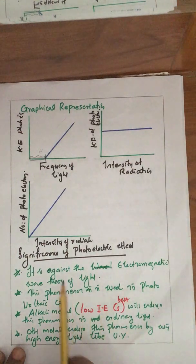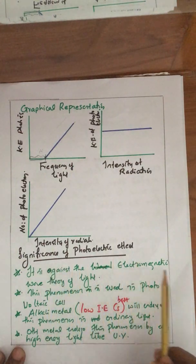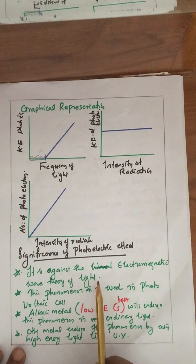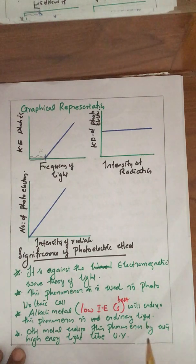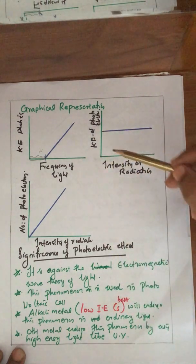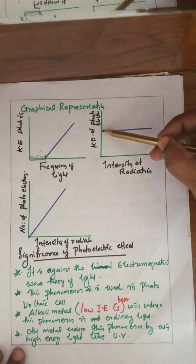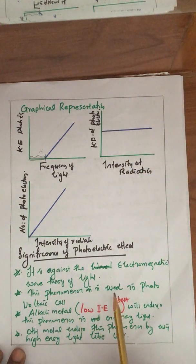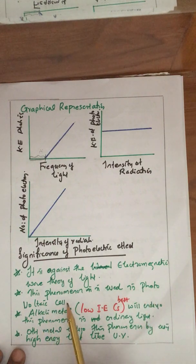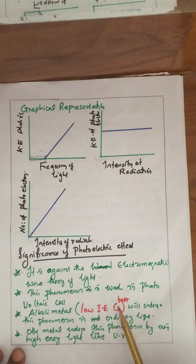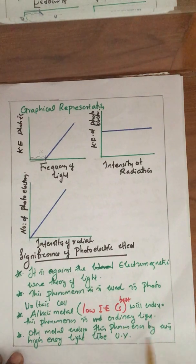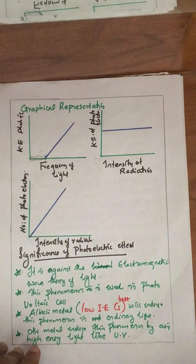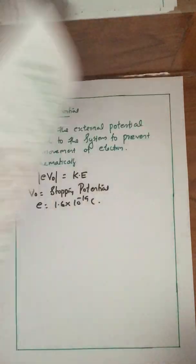The significance of the photoelectric effect is that it goes against the electromagnetic wave theory of light, which states that the energy of light is proportional to intensity — but we find that energy is independent of intensity. This phenomenon is used in photovoltaic cells and solar cells. Alkali metals, especially cesium, best undergo this phenomenon under ordinary light; other metals require high-energy light like UV. Therefore, alkali metals are frequently used in solar cells.